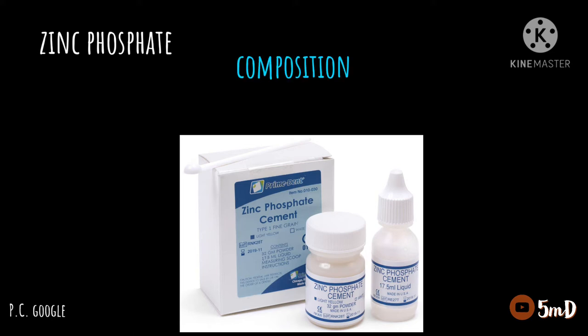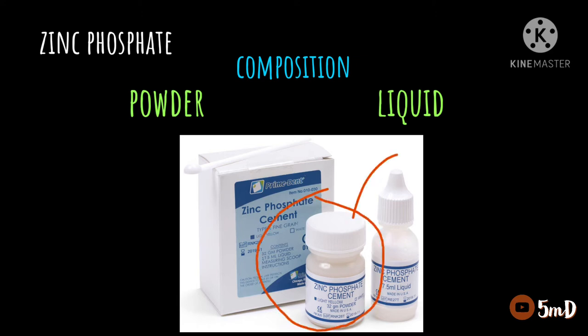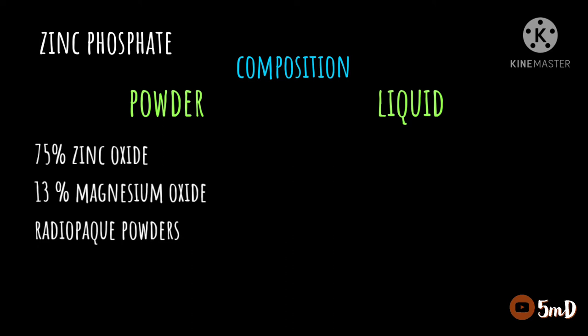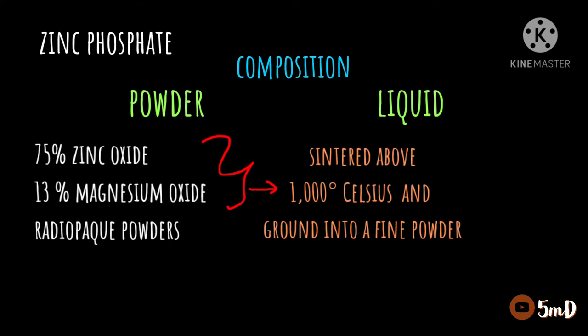Zinc phosphate cement consists of a powder component and a liquid component. The powder consists mainly of 75% zinc oxide and 13% magnesium oxide, along with some radio-opaque powders. The zinc oxide and magnesium oxide are sintered above 1000 degrees Celsius and then ground into a very fine powder.